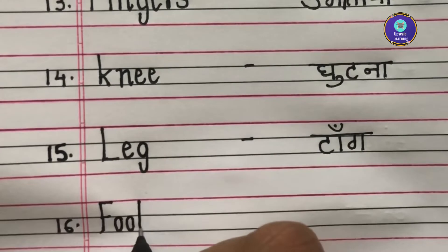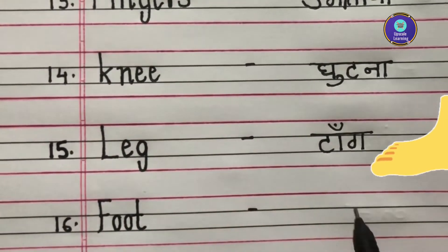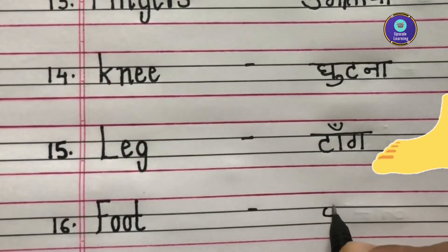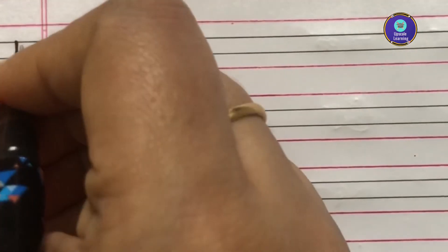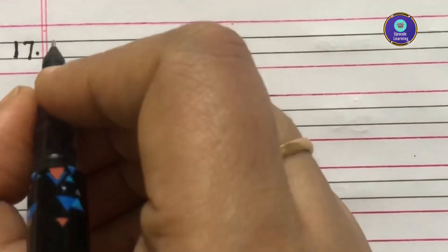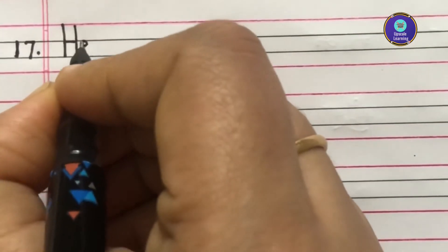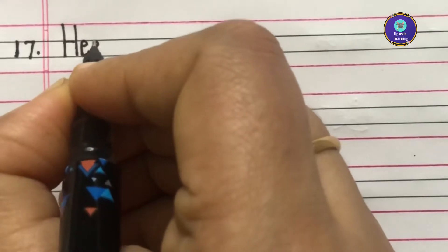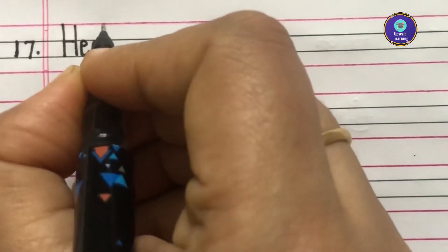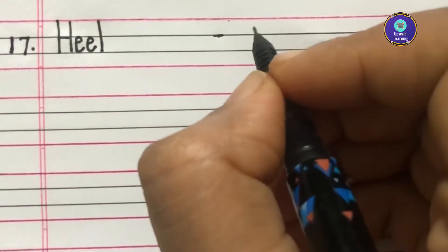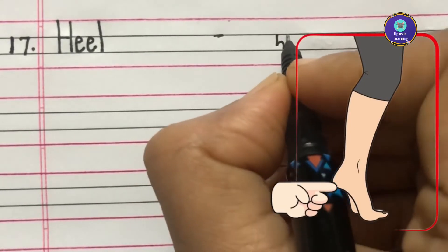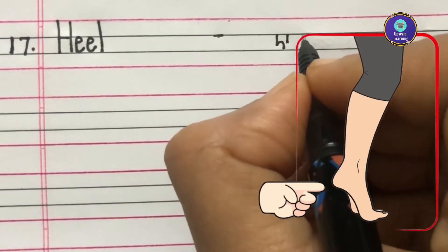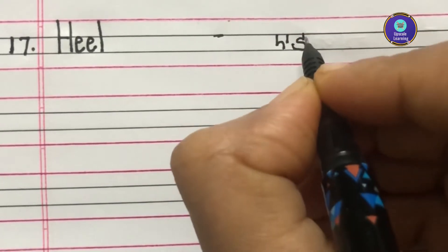Sixteenth one is Foot, F-O-O-T. Foot ko hum Pair kehtae hain. Heel, H-E-E-L. Heel is called as Aad in Hindi.